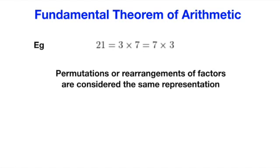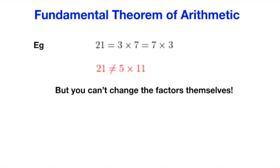Here, we count rearrangements as the same representation. So while you can express 21 as 3 times 7, or 7 times 3, you cannot have another representation where 21 equals 5 times 11, for example. We can now go back to Magata's question earlier.